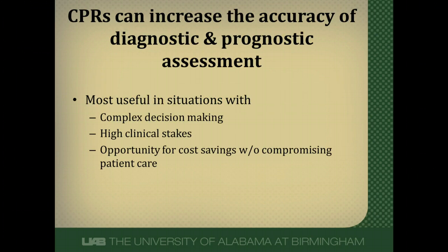Clinical prediction rules are most useful for complex decision making. For example, someone comes in with symptoms of a pulmonary embolus, but you're worried it could be something else. How do you decide when it's appropriate to get a D-dimer or when to move to more advanced testing like a CT angiography or a VQ scan?